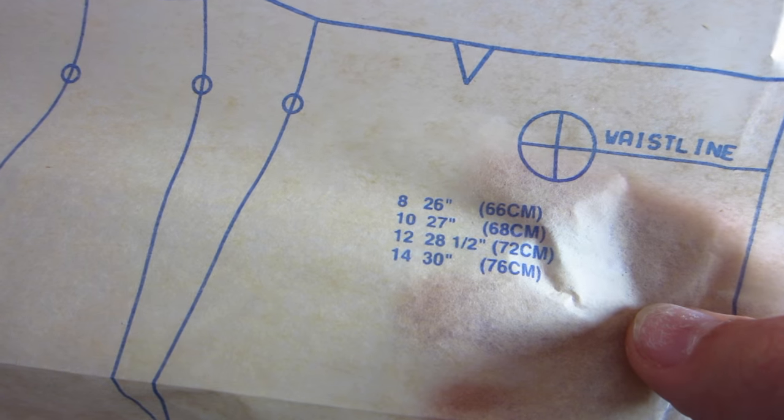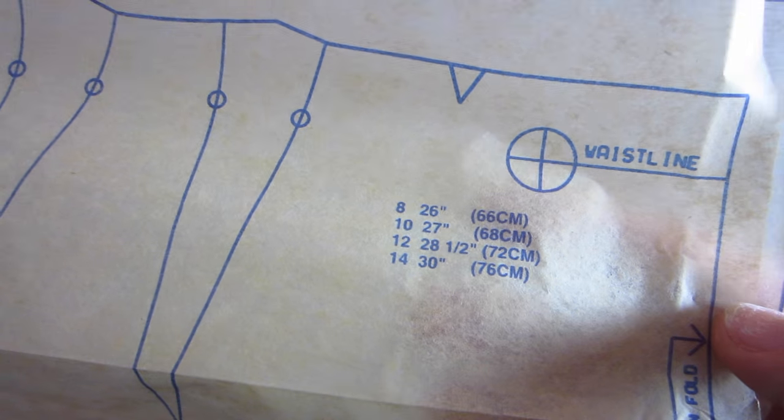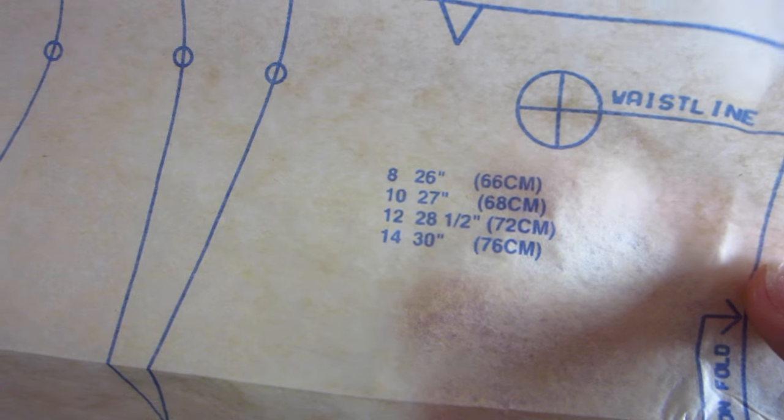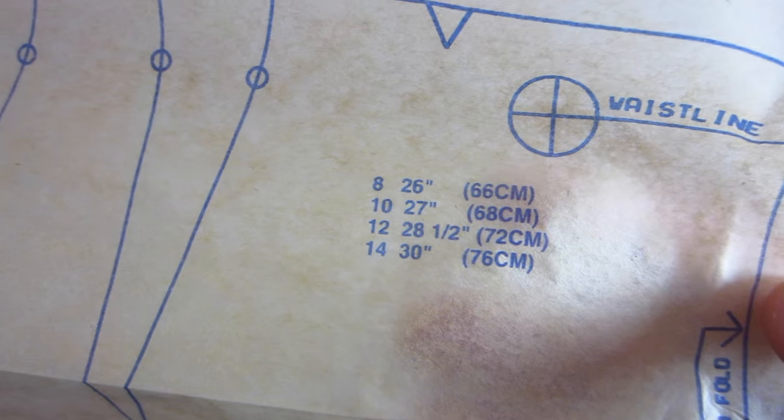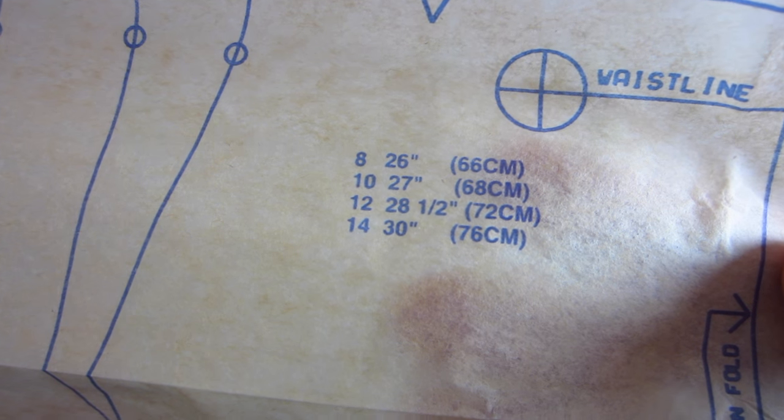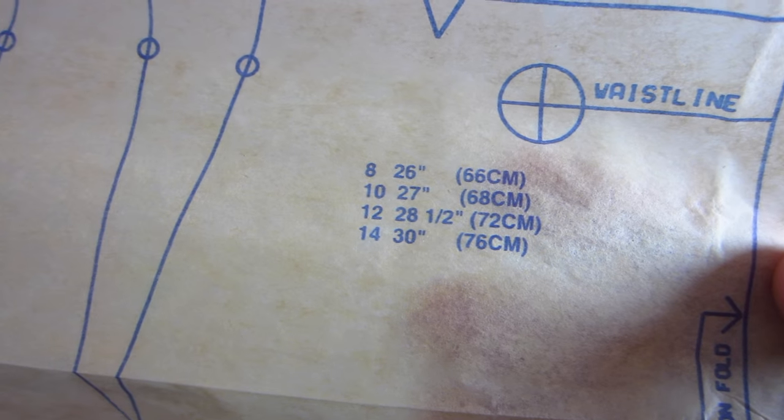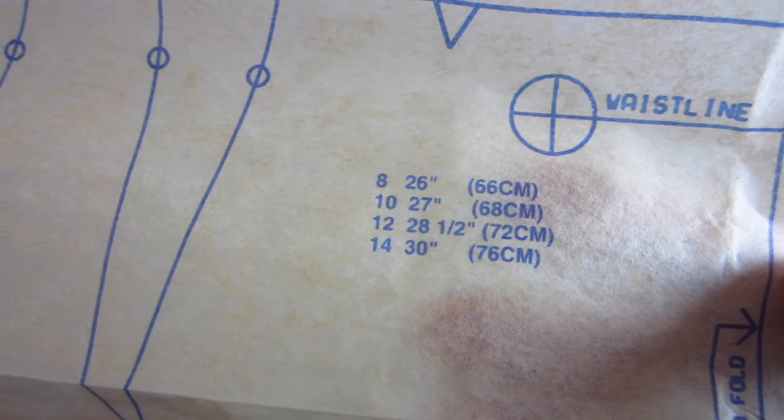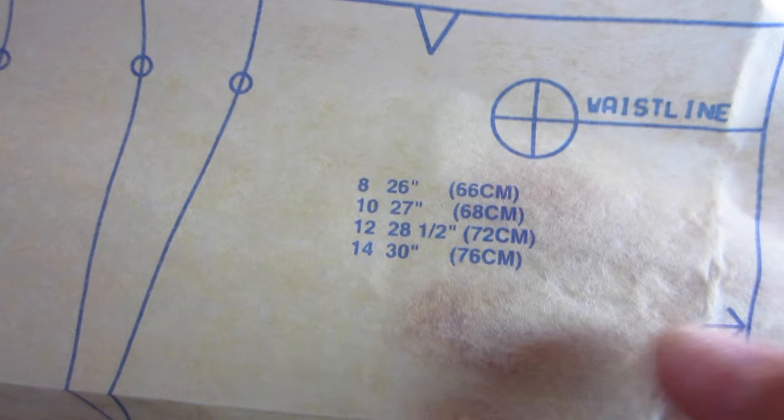Now unlike the measurements that were on the envelope or on the pattern instruction booklet, these are finished garment sizes. So this is not including seam allowances, not including darts, not including anything that needed to be taken out.